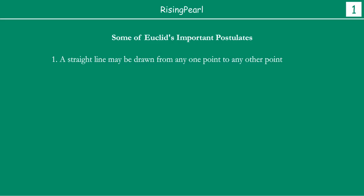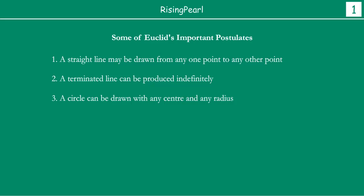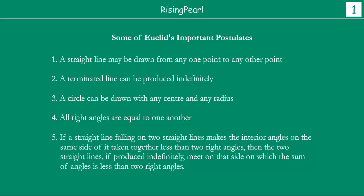The first postulate: a straight line may be drawn from any one point to any other point. Postulate number two: a terminated line can be produced indefinitely. Third postulate: a circle can be drawn with any center and any radius. Postulate number four: all right angles are equal to one another. And finally, the fifth postulate: if a straight line falling on two other straight lines makes the interior angles on the same side taken together less than two right angles, then the two straight lines, if produced indefinitely, meet on that side on which the sum of angles is less than two right angles.